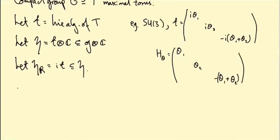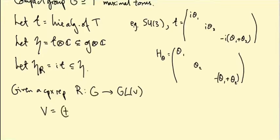Given a complex representation R of G on a vector space V, we know that V splits as a direct sum of weight spaces W_lambda.